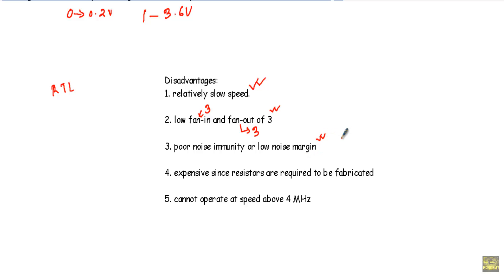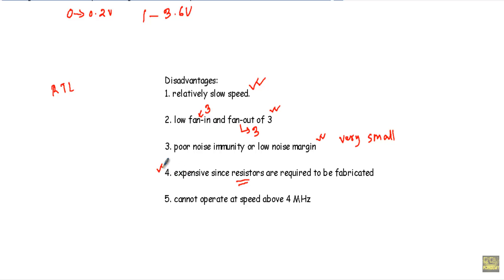Third, it has poor noise immunity or low noise margin, meaning the noise margin will be very small, so this RTL circuit will be easily affected by noise. Fourth, it is expensive since resistors are required to be fabricated — fabrication of resistors in a digital IC enhances the cost. Finally, it cannot operate at speeds above 4 megahertz.